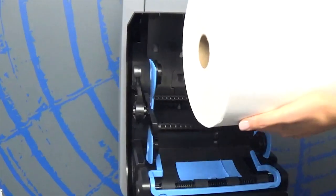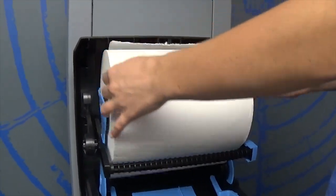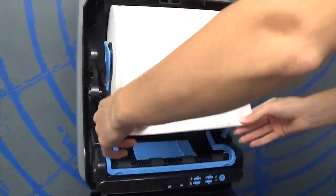To begin loading the dispenser, line up the plug with the holder and insert the roll with the towel laying over the roll. Feed the towel through the slot.